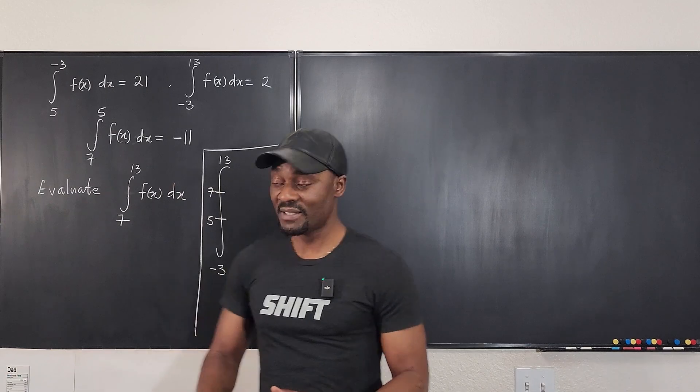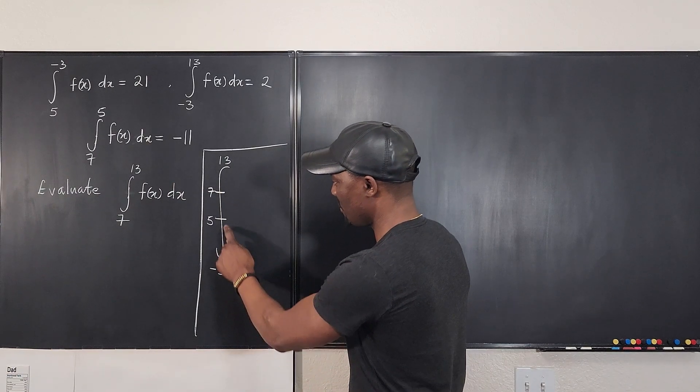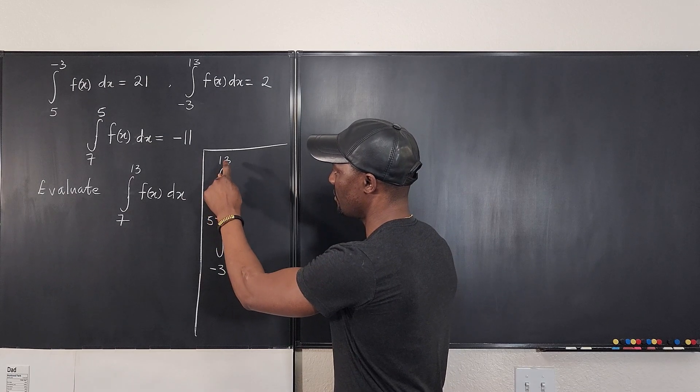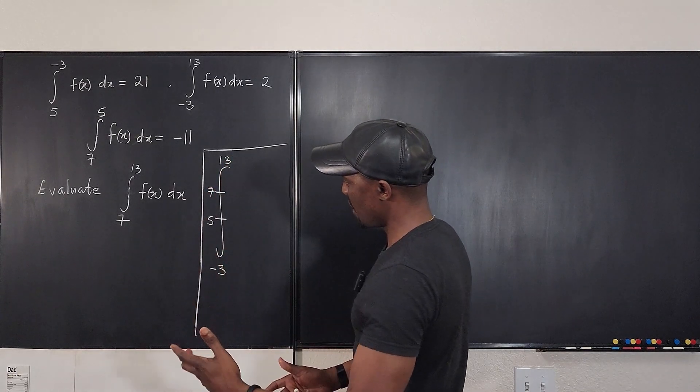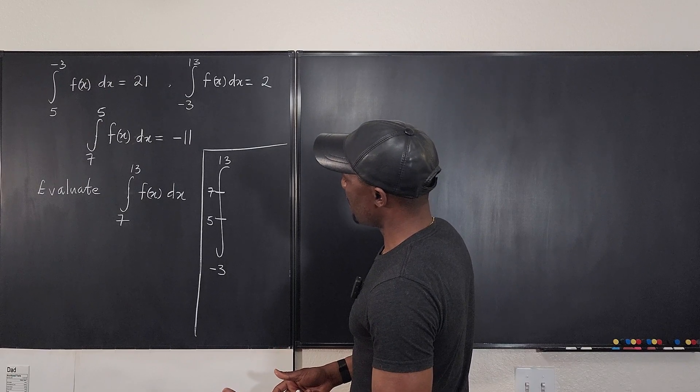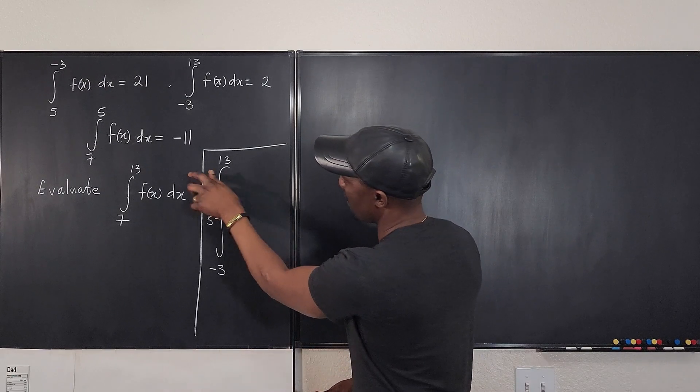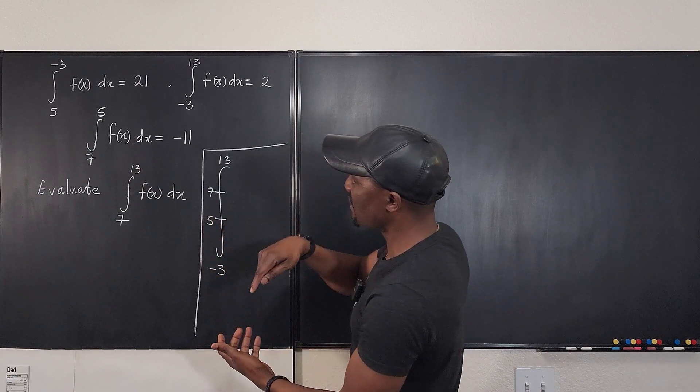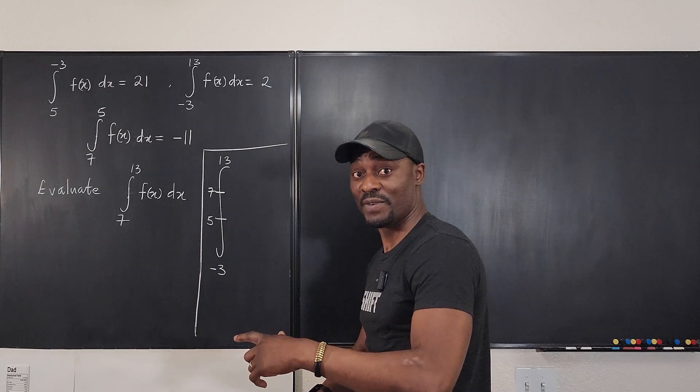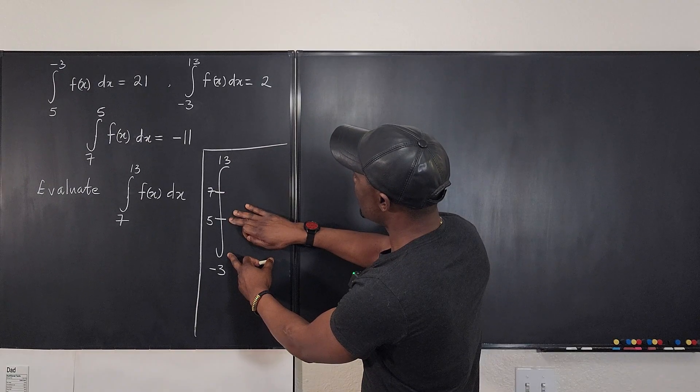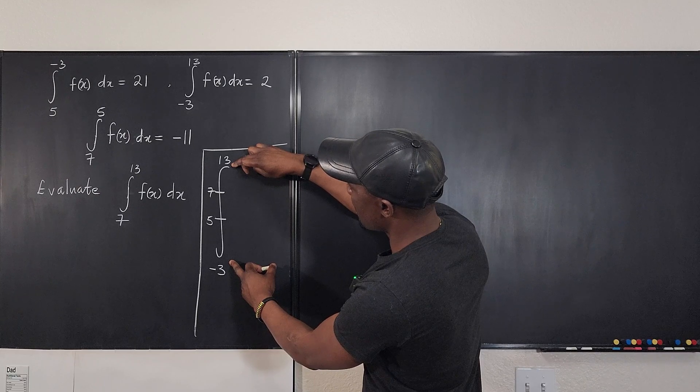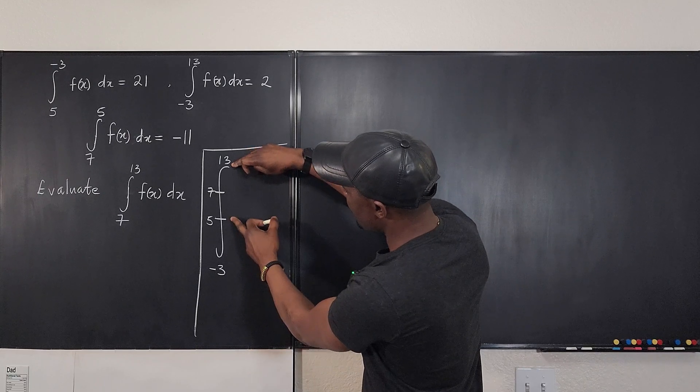So it simply means if you go from negative 3 to 5 and you add it from 5 to 7, and you add from 7 to 13, you're going to get your answer. So what were we given? We were given from 5 to 7. Oh, we were given from 7 to 5 if it was reversed. But you know that if it is reversed, you can flip it. And we were given from negative 3 to 13. And we're asked to find from 7 to 13.